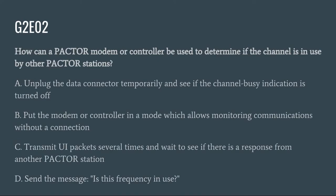G2E02: How can a PACTOR modem or controller be used to determine if the channel is in use by other PACTOR stations? A. Unplug the data connector temporarily and see if the channel busy indication is turned off. B. Put the modem or controller in a mode which allows monitoring communications without a connection. C. Transmit UI packets several times and wait to see if there is a response from another PACTOR station. Or D. Send the message 'is this frequency in use?' The correct answer is B: put the modem or controller in a mode which allows monitoring communications without a connection.